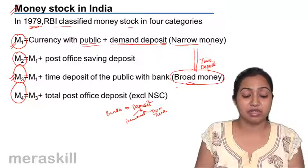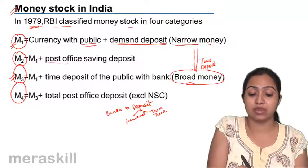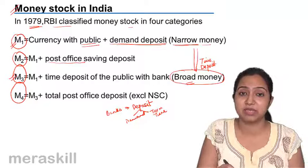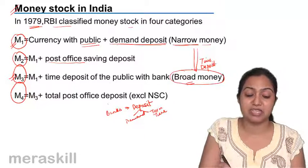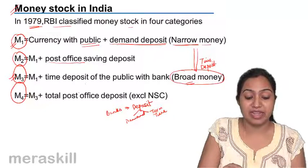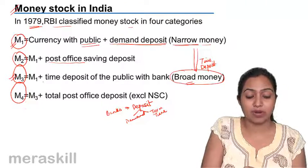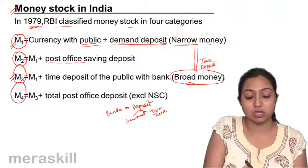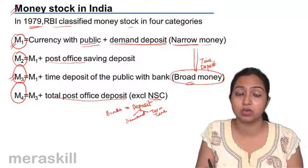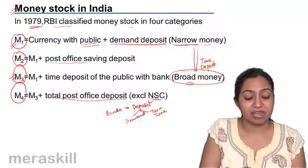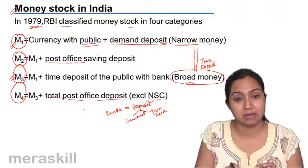After M1 there is M2. If in narrow money you add post office savings deposits, it becomes M2. Then M3 is M1 plus time deposits. And M4 is M3 plus total post office deposits, excluding national savings certificates. When in broad money you add total post office deposits, it becomes M4.